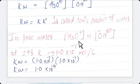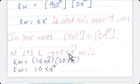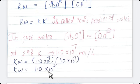For pure water, hydronium ion concentration equals hydroxyl ion concentration. At 298 Kelvin, the value of these concentrations is 1.0 × 10⁻⁷ mole per liter. Putting this value into the formula, we get the value of Kw — the ionic product of water — equal to 1.0 × 10⁻¹⁴. This is nothing but auto ionization of water.